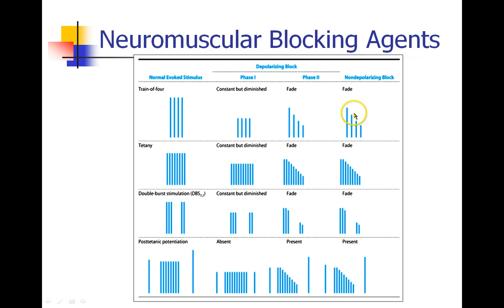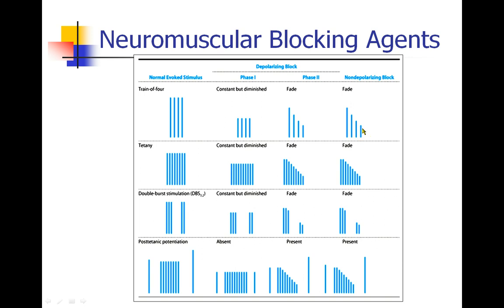Compare this to the non-depolarizer, where you see fade: the first twitch is stronger but each subsequent twitch gets weaker. If the dose is high enough, the fourth twitch may be so diminished that it's gone, and they only have three twitches or two twitches, and so on.